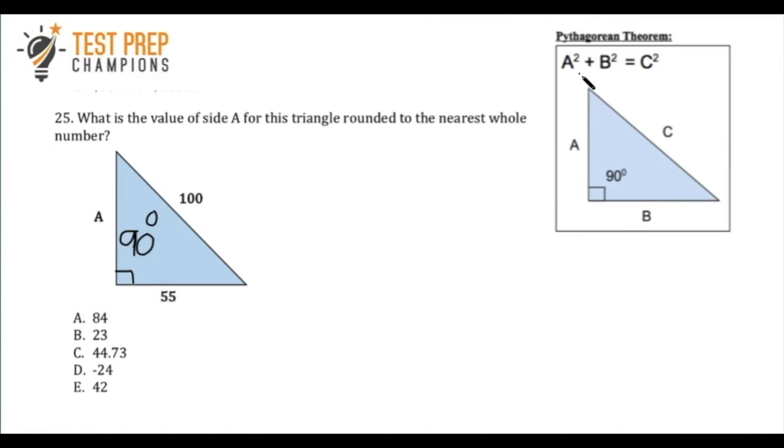And so we can use this formula to get the right answer, and all we have to do is figure out what side A is. We may then have to round to the nearest whole number. So in the formula, we don't know what A is yet, so I'm just going to keep it as A squared.